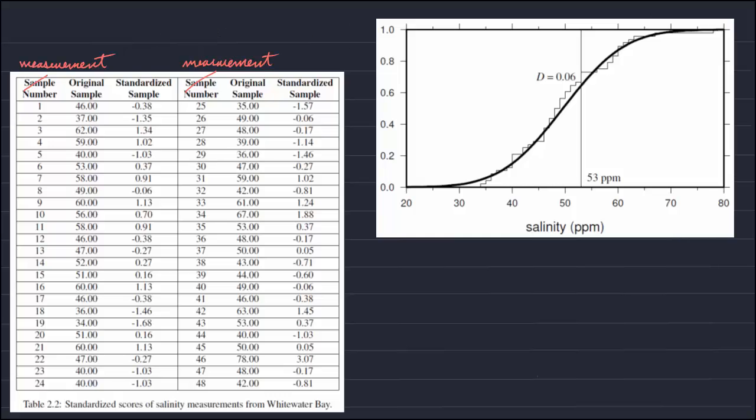So, considering an example, the example that Wessel gives, is he's comparing salinities from Whitewater Bay to a normal distribution. So, in this example, there are N equals 48 measurements. And he sets the significance level to 5%. Now, he numerically calculates the cumulative distribution for the sample.